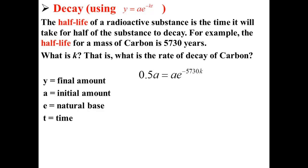Here, we take the equation and plug in our known values. The a's on each side cancel out. Here, we're plugging in 0.5a because we want to know when we get half of a.